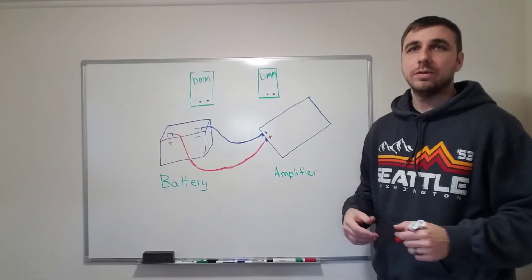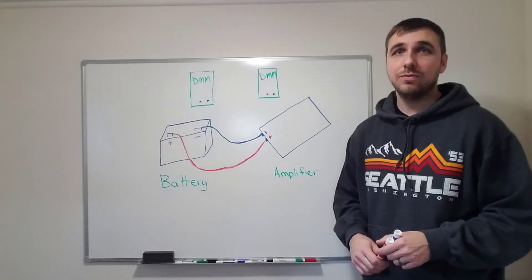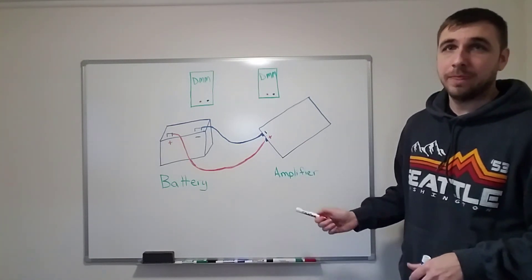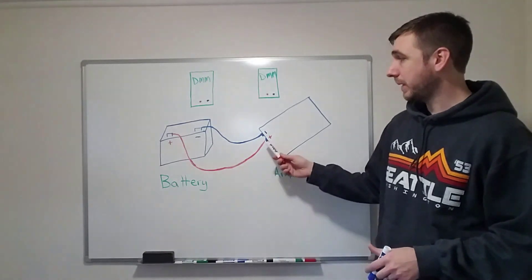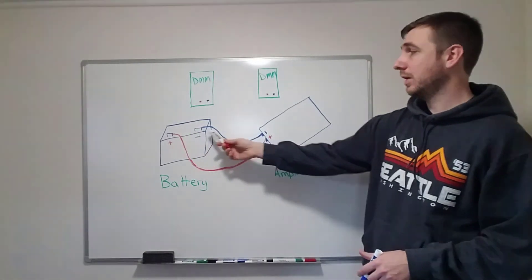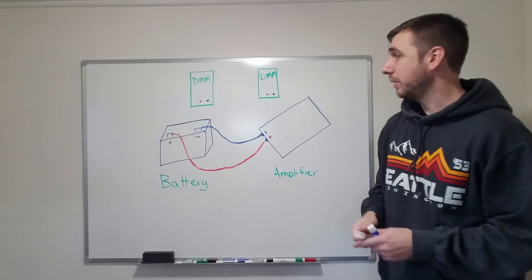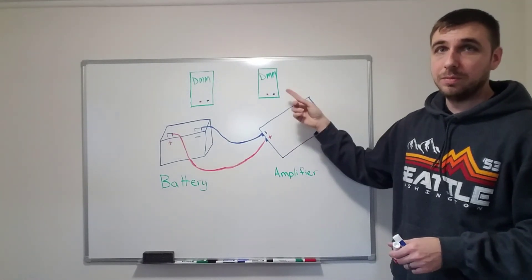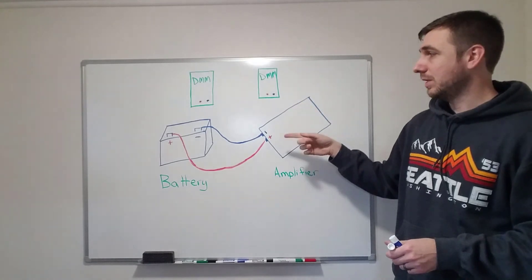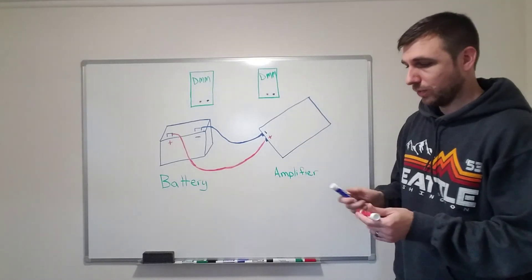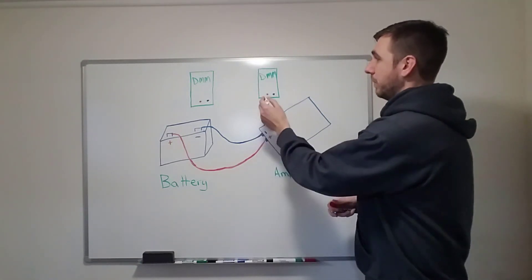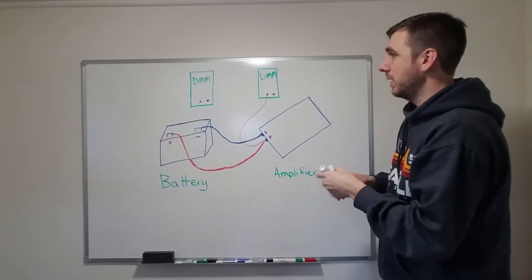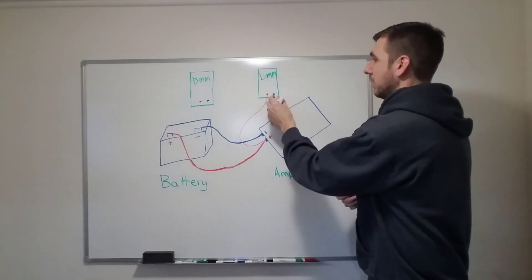But let's take a look at an example of something that you might actually find in your car. If you can't tell by this awesome picture that I've drawn, what you see here is a battery connected to an amplifier and they're connected in parallel just like in the last circuit - positive to positive, negative to negative. Now if I wanted to test the voltage across the amplifier, I would connect the multimeter in the same way as I did on the last circuit, in parallel with the amplifier with the positive test lead going to the positive terminal of the amplifier and the negative test lead to the negative terminal of the amplifier.